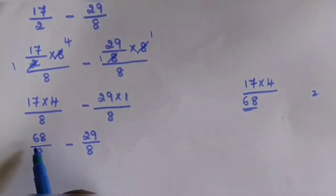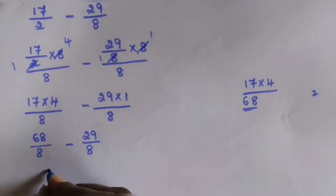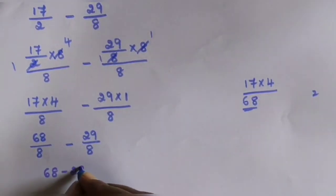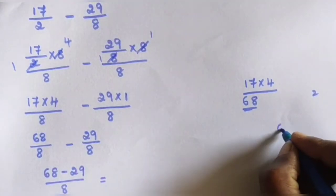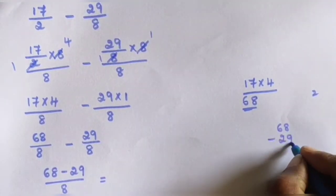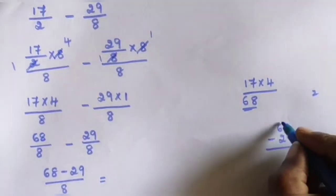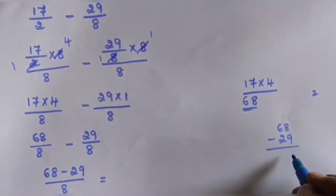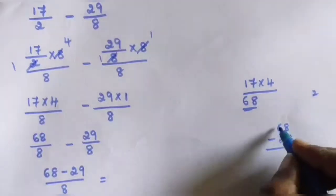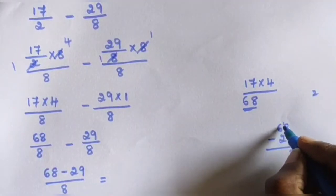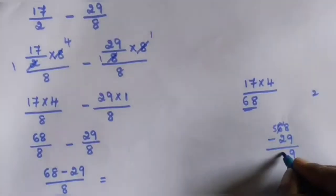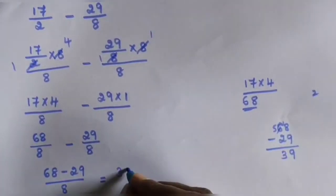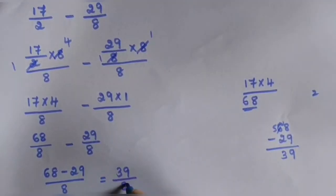Now subtract the numerators: 68 minus 29 divided by 8. 68 minus 29: 8 minus 9, take 1 carry, 18 minus 9 is 9; 5 minus 2 is 3. So the answer is 39 divided by 8.